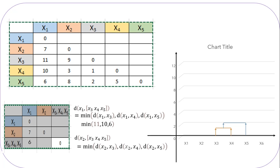Now we check for data point x2. Distance from x3 to x2 is 9, distance from x4 to x2 is 3, and distance from x5 to x2 is 8. The minimum value is 3, so distance from cluster x3-x4-x5 to x2 will be 3. Our new matrix is formed. The minimum value in this matrix is 3, so we combine data point x2 with cluster x3-x4-x5 and draw a dendrogram at a height of 3. We are now one step away from forming the final dendrogram.